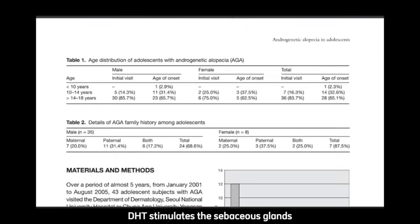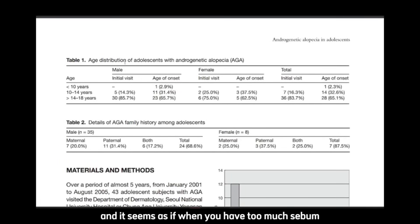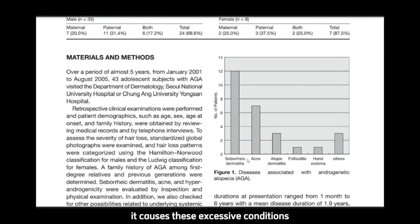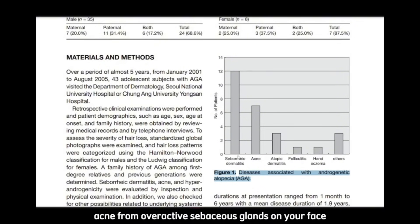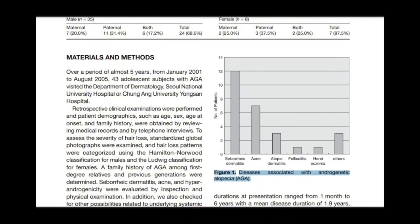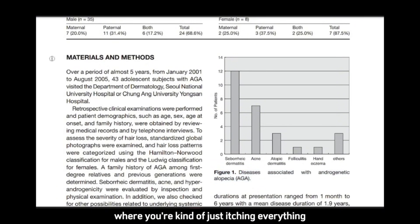DHT stimulates the sebaceous glands in all of these conditions. When you have too much sebum, it causes these excessive conditions — seborrheic dermatitis, hair loss from androgenetic alopecia, acne from overactive sebaceous glands on the face, and atopic dermatitis where you're just itching everything.